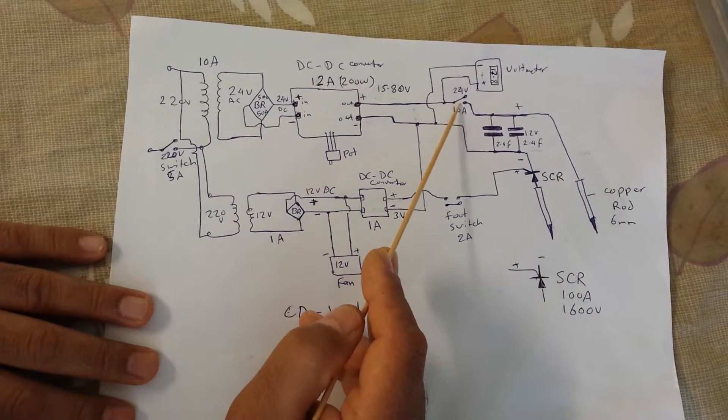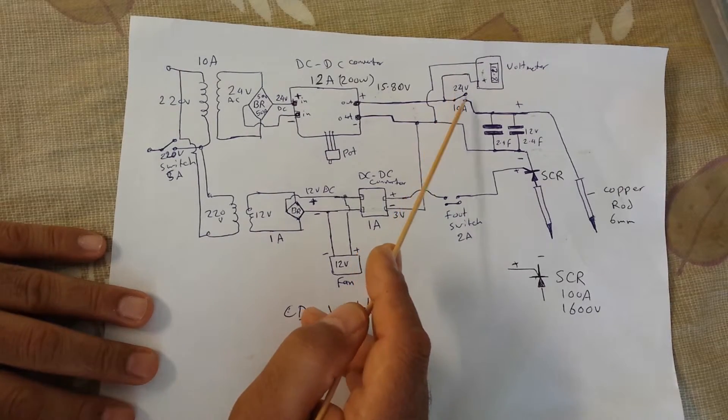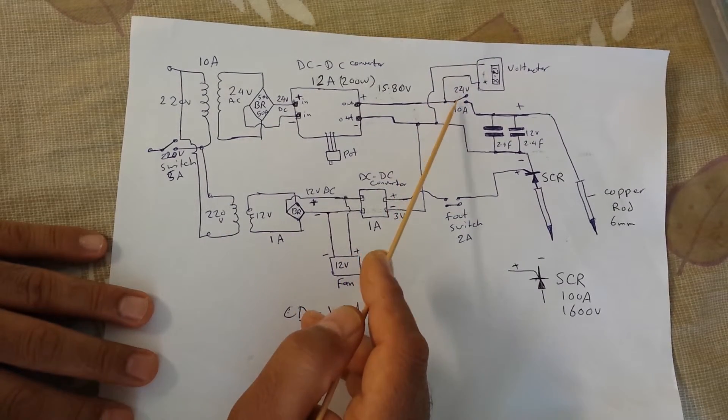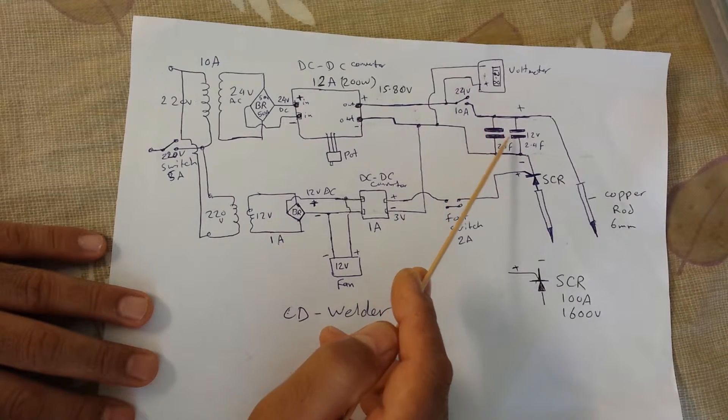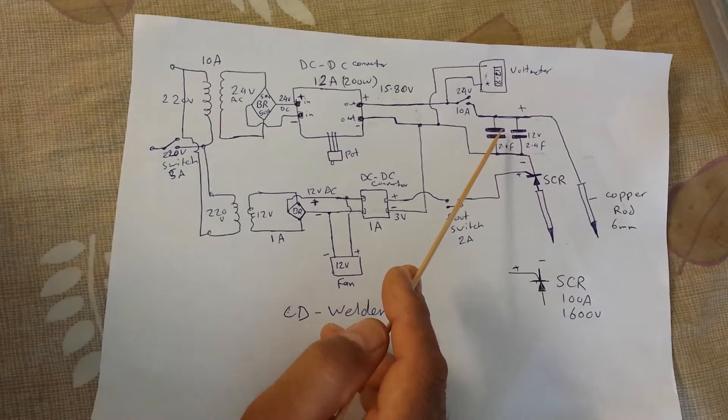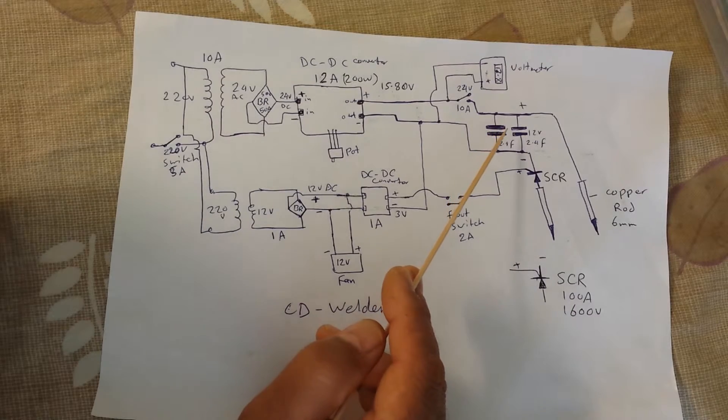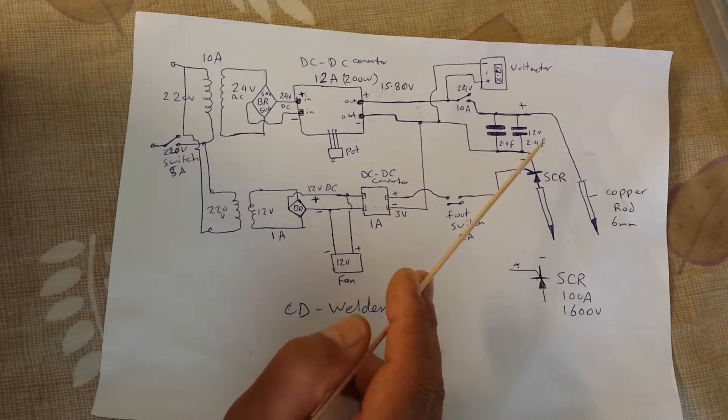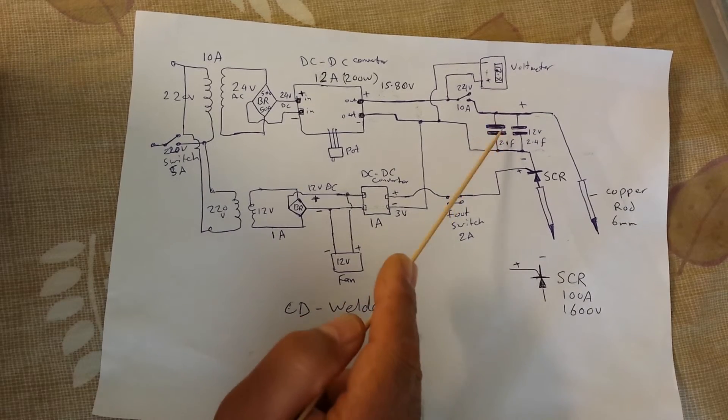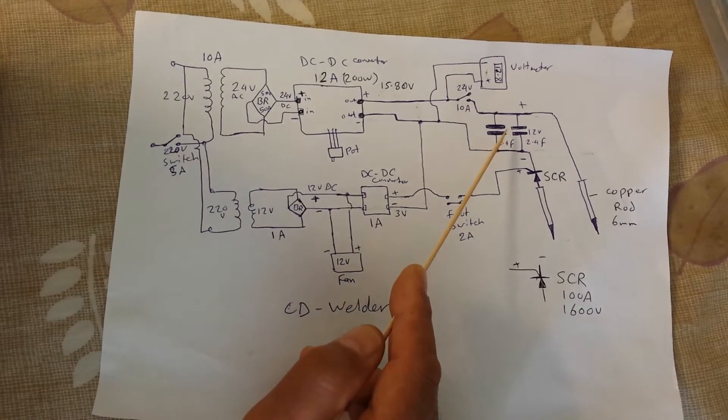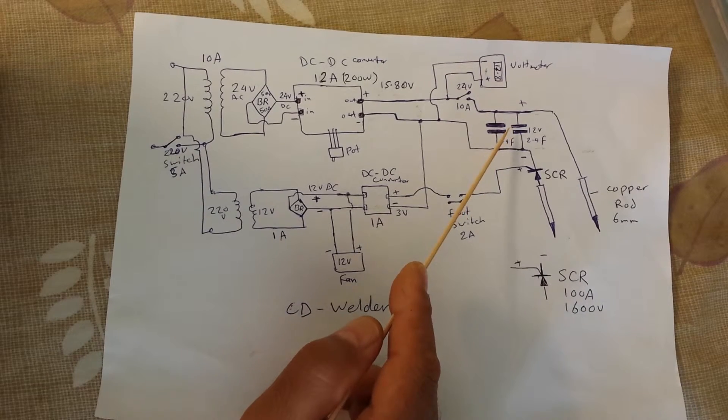This switch should be 10 amps or more, 24 volts or 20 volts, whatever—the higher the better. After that we take the voltage to the capacitors. These are audio car capacitors and I'm using two capacitors in parallel. One of them is I think one farad and the other one is 2.4 farads.